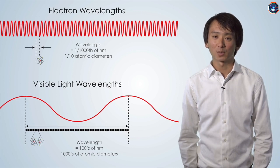Visible light has a range of wavelengths in the hundreds of nanometers, or thousands of atomic diameters. It is these short wavelengths that enable imaging at the atomic scale.